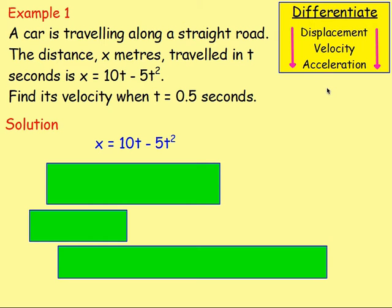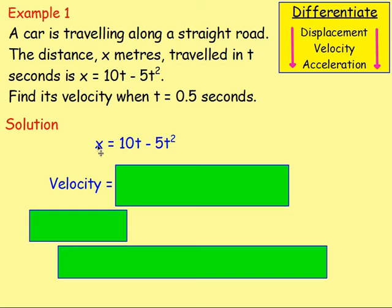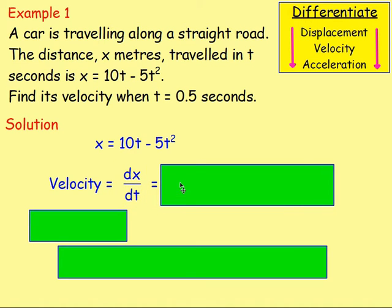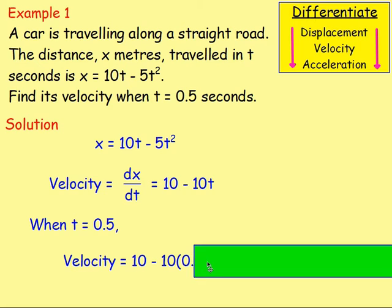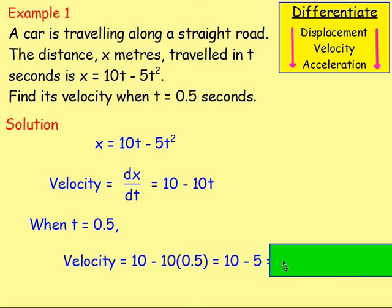Example 1: a car is travelling along a straight road. The distance x metres travelled in t seconds is x equals 10t take away 5t squared. Find its velocity when t equals 0.5 seconds. We know the distance is x = 10t − 5t². To get the velocity you differentiate: dx/dt = 10 − 10t. Replacing t with 0.5 gives the velocity equals 10 − 10 × 0.5 = 10 − 5 = 5 metres per second.